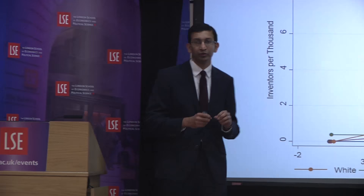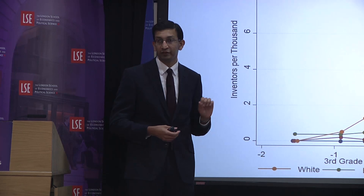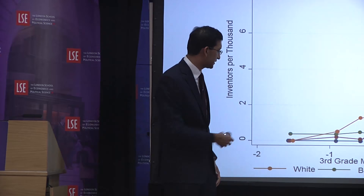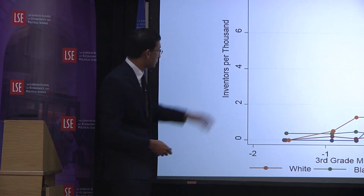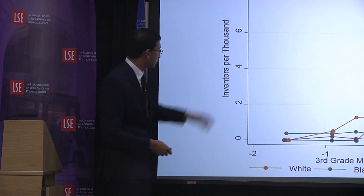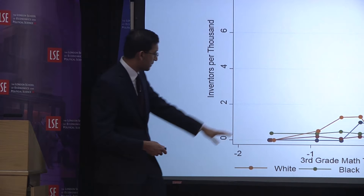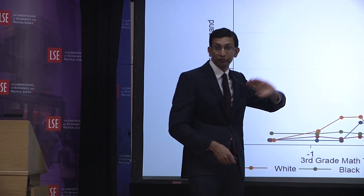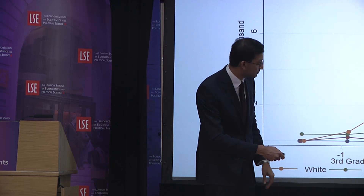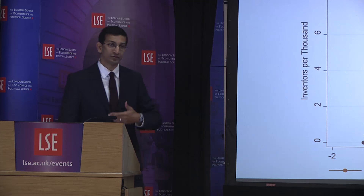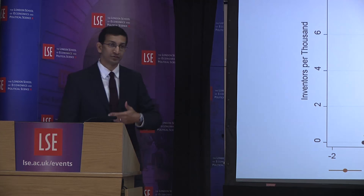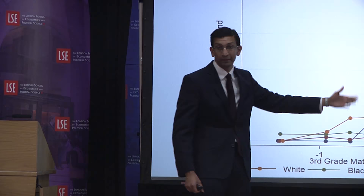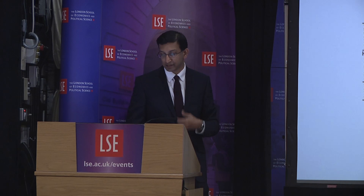You see analogous results when you look at other dimensions such as race. Plotting inventors versus third-grade math test scores broken down by race, for Asians and whites the probability of becoming an inventor shoots up in the upper tail, but for blacks and Hispanics it's virtually flat. The fraction of black kids who are doing very well in their third-grade classes and go on to become inventors is extremely close to zero, even though they have basically the same measured ability as white and Asian kids.